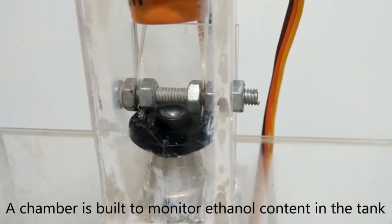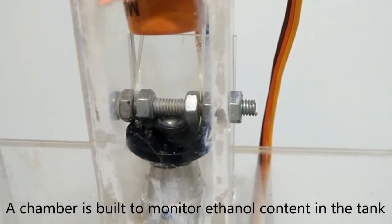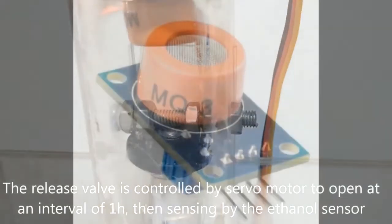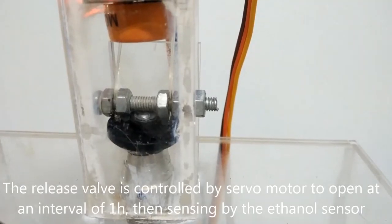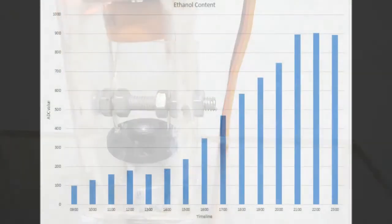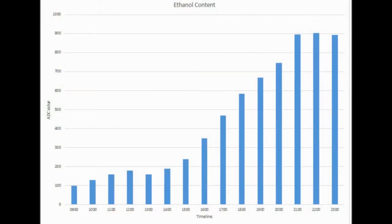A chamber is built to monitor ethanol content in the tank. The release valve is controlled by servo motor to open at intervals of one hour, then sensing by the ethanol sensor. The result shows the ethanol content peaks at around 12 hours.